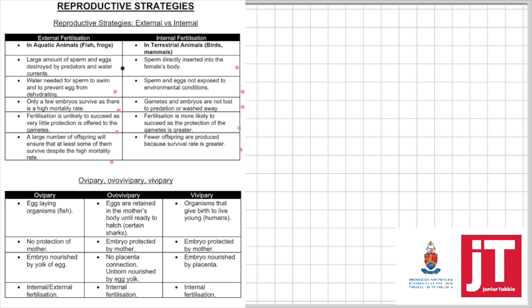Oviparity: egg-laying organisms — eggs are laid outside the female's body. Ovoviviparity: the egg is retained in the mother's body until ready to hatch, and she gives birth to live young. Viviparity: organisms give birth to live young. In oviparity, there is no protection by the mother. In ovoviviparity and viviparity, the embryo is protected by the mother. In oviparity, the embryo is nourished by the yolk. In ovoviviparity, there is no placental connection and the embryo is nourished by the egg yolk. In viviparity, the embryo is nourished by the placenta. Oviparity can involve internal or external fertilization; ovoviviparity and viviparity involve only internal fertilization.